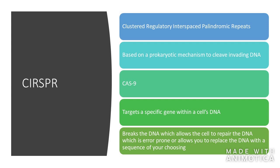A protein known as Cas9 combines with two short RNA molecules that match a specific sequence within a DNA. It then binds to a sequence known as the PAM. Cas9 is a nuclease and cuts the DNA.